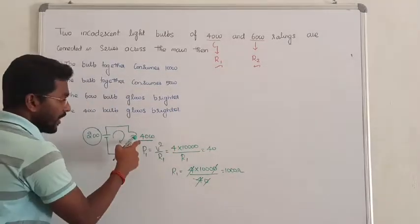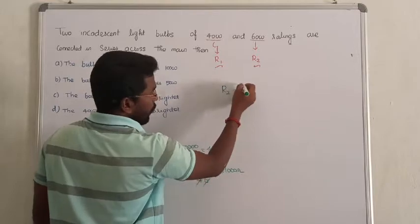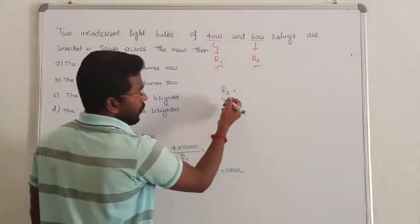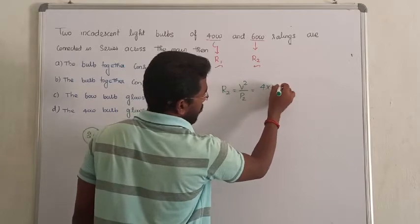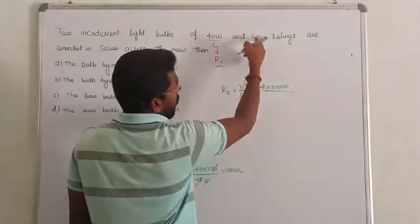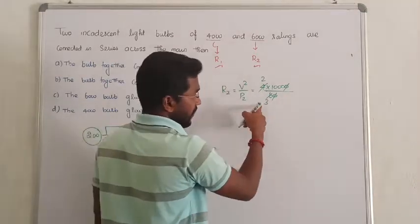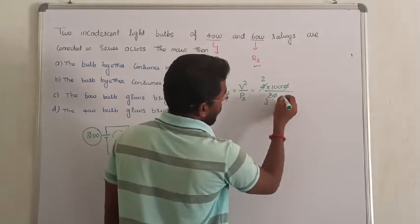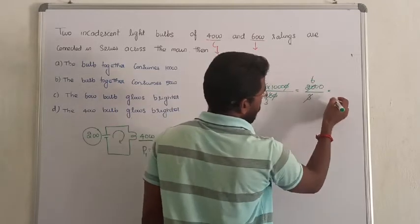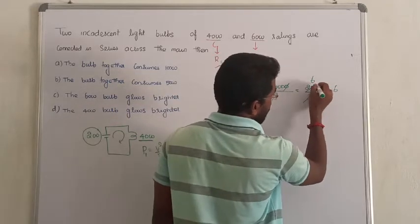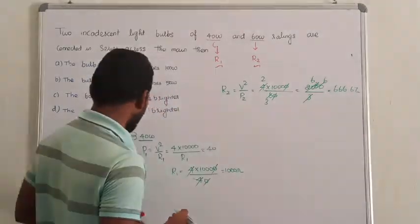In the second case, let me do one more thing. The value of R2: P2 equals V squared by R2, so R2 equals V squared divided by P2. The supply voltage remains the same, so V squared is again 40,000. Maximum rating of the second bulb is 60 watts. So R2 equals 40,000 divided by 60, which gives approximately 666.67 ohms. Now I know the value of R2 and also the value of R1.